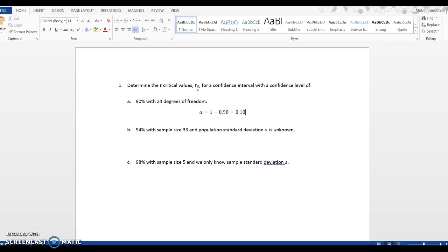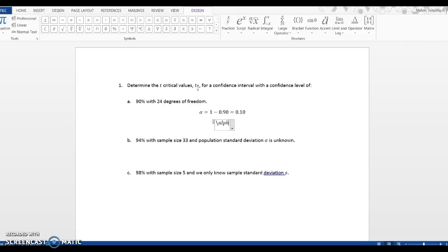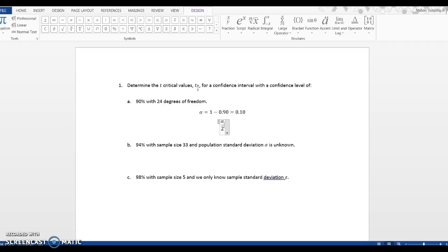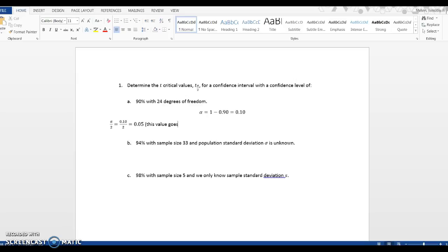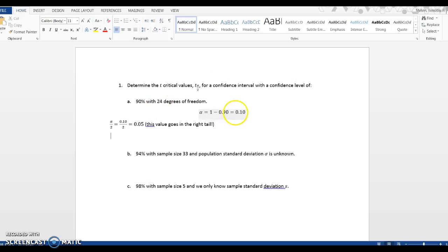Then we look at alpha over 2, which is half of 0.10, which is 5%. So half of 10% is 5%, and this value goes in the right tail.